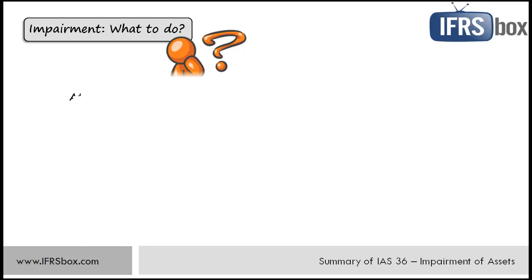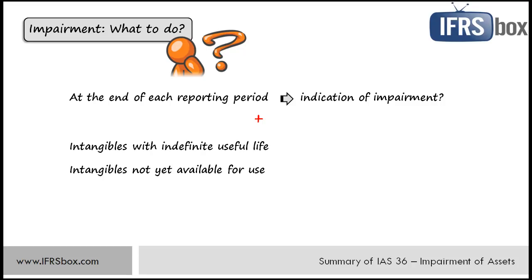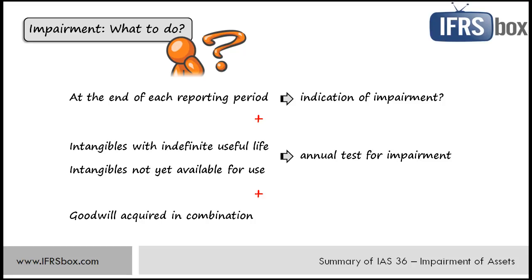Each entity that wants to comply with IFRS has to do some work at the end of each reporting period. It's necessary to assess whether there is any indication — external or internal — that an asset might be impaired. You don't need to perform testing each year, just assess the indicators. But if there's any indication, then the asset must be tested. However, if an entity owns certain intangible assets with indefinite useful lives — such as some trademarks or intangibles not yet available for use — then an entity must perform impairment tests annually even if there's no indication. At the group level, goodwill recognized on a business combination must also be tested for impairment annually.